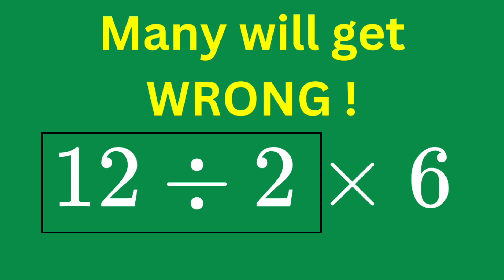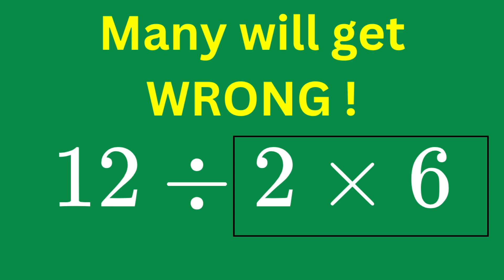Do we do the division first, 12 divided by 2, and we'll get a final answer of 36? Or do we do the multiplication first, 2 times 6, and we'll get a final answer of 1?